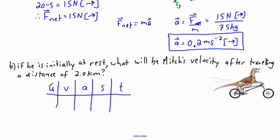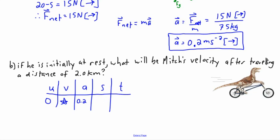So I write this out and ask: what's my initial speed? Well, if I'm initially at rest, that's zero. What's my final speed? That's what I'm looking for, so I'll put a star there. What's my acceleration? I found that it's 0.2 — I'll be sloppy and not put the units in, but I know it's to the right. What's my displacement? That's how far I've traveled — two kilometers. So should I just put a two in here? Nope, I should not do that.